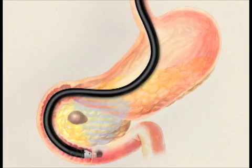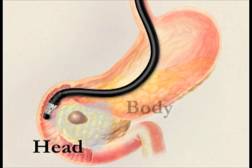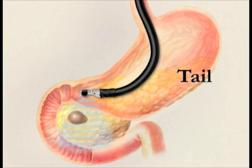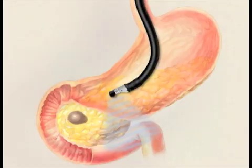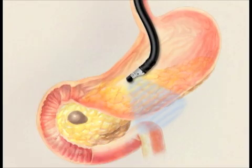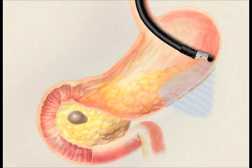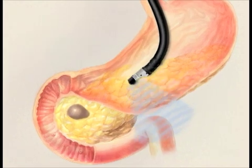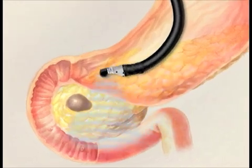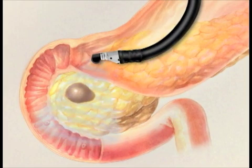The ultrasound probe is then withdrawn towards the stomach and moves along to examine the head, body, and tail of the pancreas for possible cysts. After thoroughly checking the pancreas, the endoscope is positioned over the cyst that was discovered. The cyst is carefully examined to detect any abnormality.